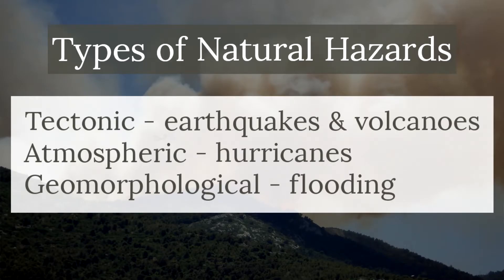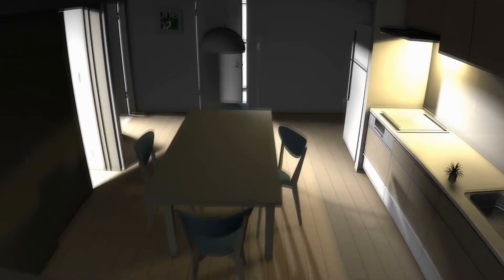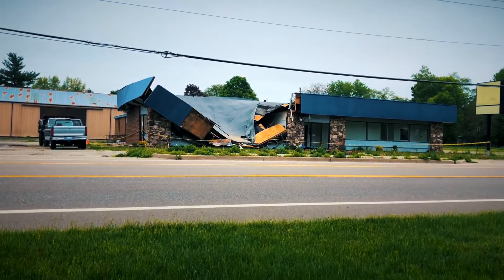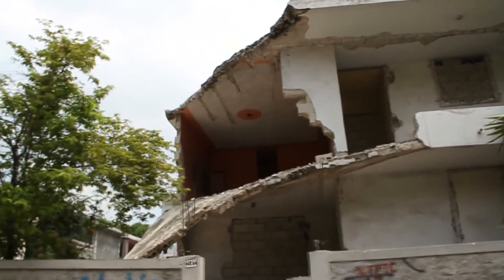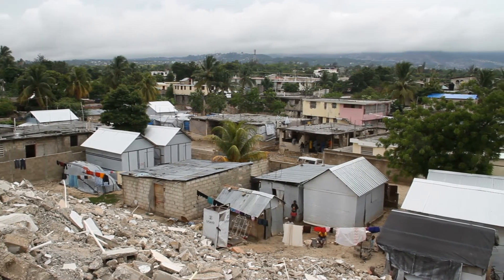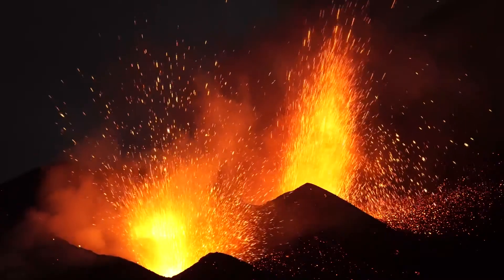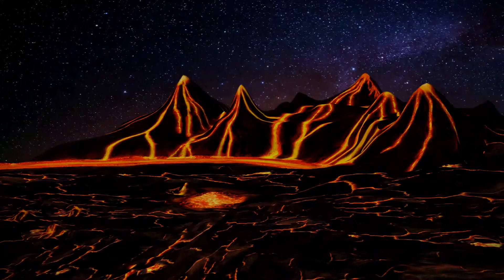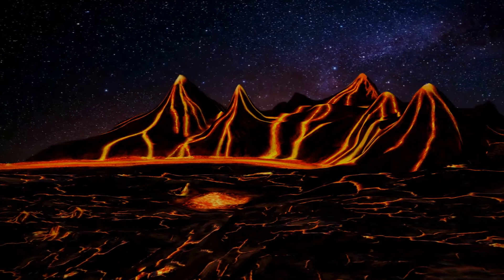The first category is tectonic hazards, or geological hazards. That includes areas we're going to look at such as earthquakes — we'll look at a few specific case studies, the effects of earthquakes, as well as responses to earthquakes. We're also going to go over volcanoes, how they work, and some of the effects and responses to those.